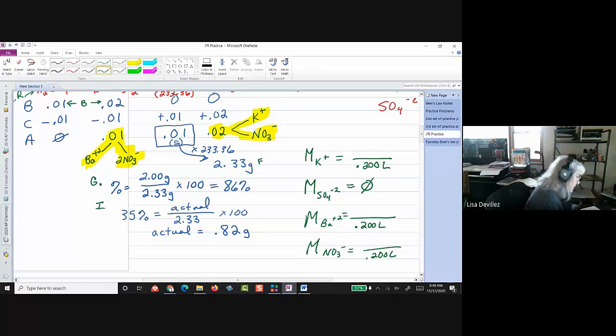And then, the mols, I'm going to get from the after line. So, the barium, it's only in there once. So, it's going to be 0.01. The potassium is only right here. So, it's going to be 0.02. The nitrate, I've got nitrate in two places. So, that's going to be 2 times 0.01 plus the 0.02.